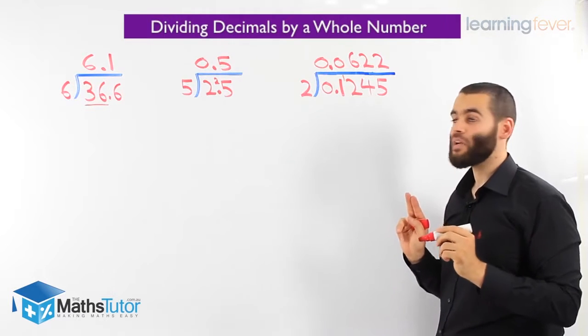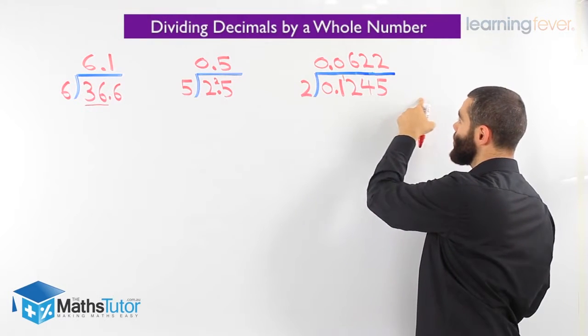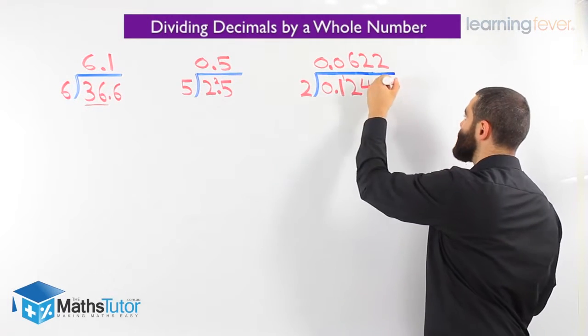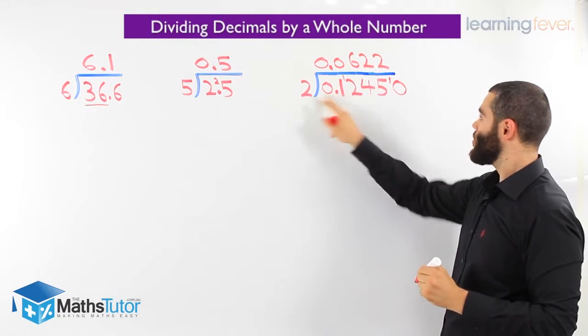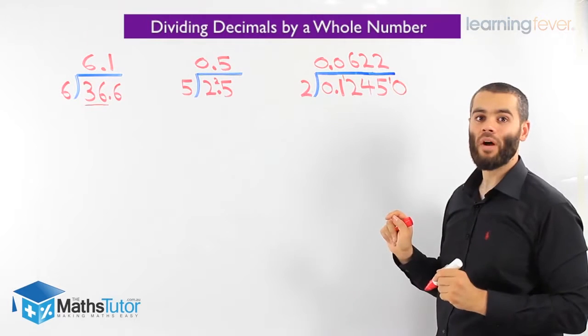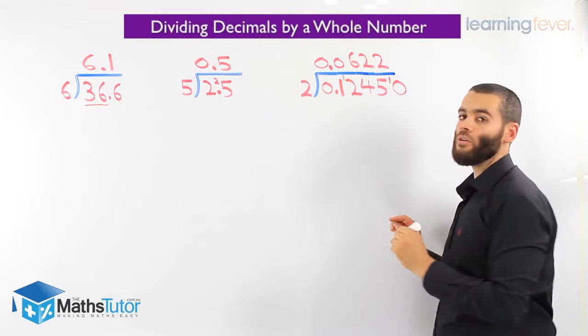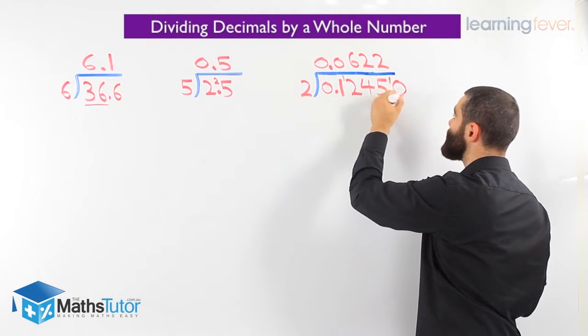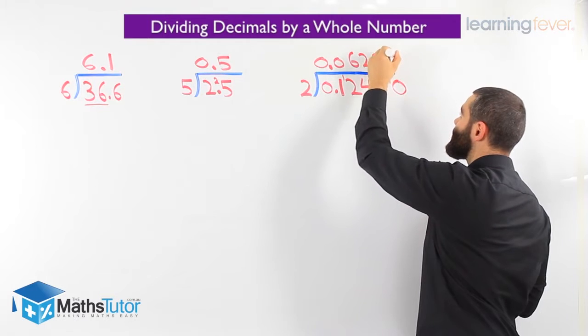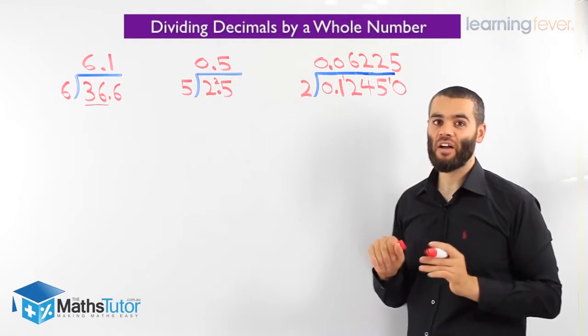2 into 5 goes twice, which makes 4 remainder 1. Now, we think, okay, we've got no more numbers. We put 0's. So, 2 into 5 goes twice, remainder 1, and all of a sudden, we've created a 0, and we've carried the 1. Now, how many 2's go into 10? 2 goes to 10 5 times.